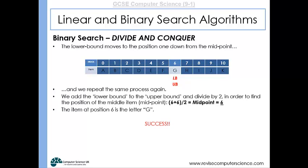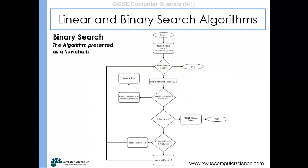Here's a flowchart representing the binary search algorithm. We start with a 'found' flag set to false, the lower bound set to zero, and the upper bound set to the length of the list minus one. We check whether 'found' is false, then calculate the midpoint by adding lower and upper bounds and dividing by two. If the item is at the midpoint, we set 'found' to true and end. If not, and we've reached the end, we print that the search failed. Otherwise, if the midpoint item is greater than our target, we adjust the upper bound to one before the midpoint.